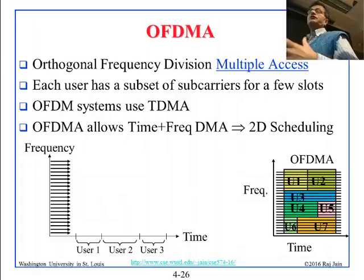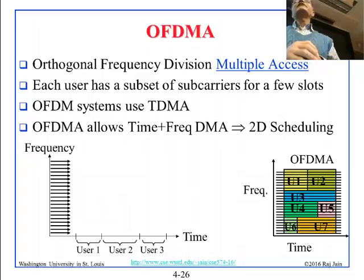OFDMA is actually 2D scheduling — both frequency and time. From now on you will start seeing 2D diagrams with time on one axis and frequency on the other, telling a user which frequencies they have and for how long. Previously, we only had one-dimensional diagrams with either time or frequency on the x-axis.